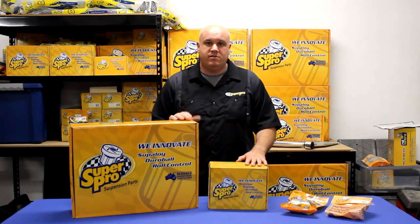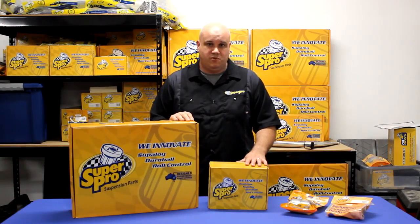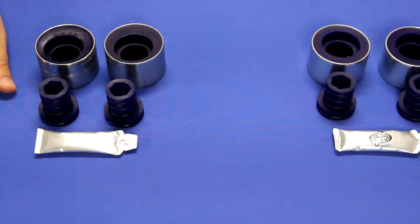Hi, I'm Brett with Super Pro Suspension and today we're going to talk about some of the different options we have with the front lower control arm of your Mark 5 or Mark 6 Volkswagen Golf. When we talk about upgrading the front end of the Mark 5, Mark 6 platform, the first place to start is the rear position bushing of the front lower control arm.